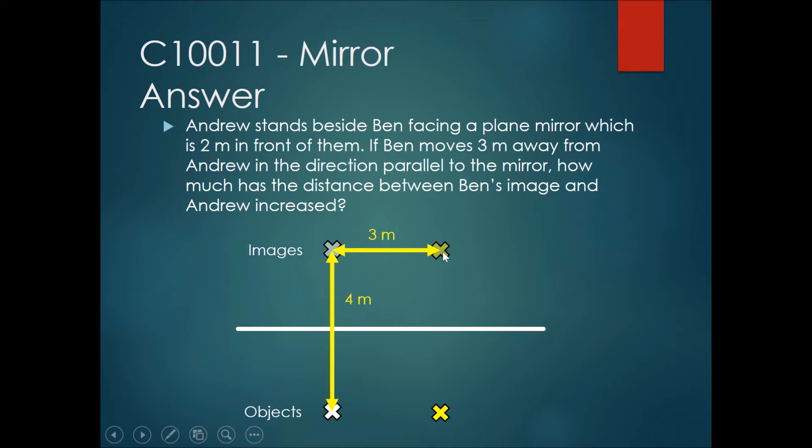Now we need to find the new distance between Ben's image and Andrew. Using Pythagoras' theorem, 4 squared plus 3 squared is equal to 5 squared. And the new distance from Ben's image to Andrew is 5 meters.